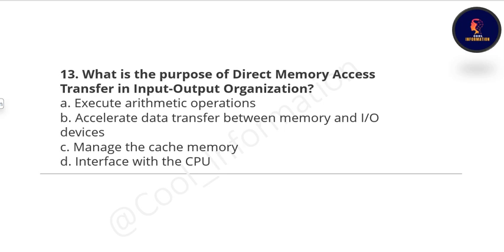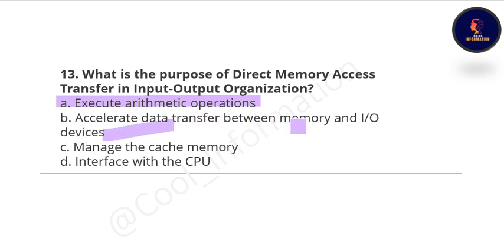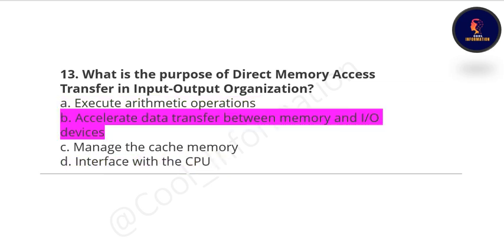Question 13: What is the purpose of Direct Memory Access transfer in input-output organization? Option A: execute arithmetic operations, Option B: accelerate data transfer between memory and input-output devices, Option C: manage cache memory, Option D: interface with the CPU. The correct option is accelerate data transfer between memory and input-output devices.